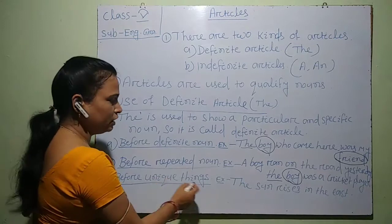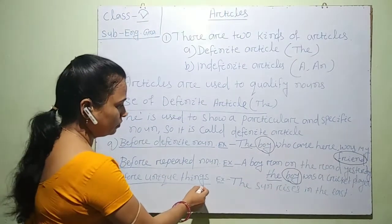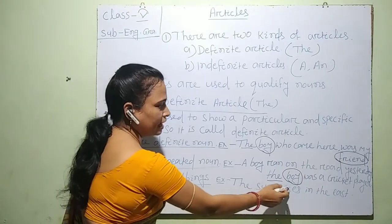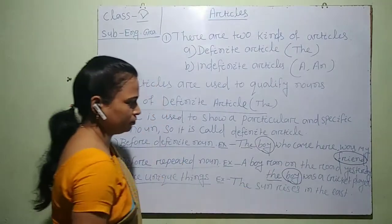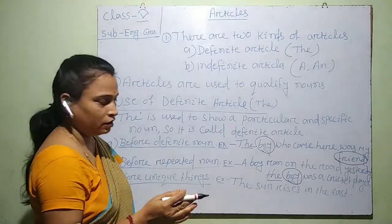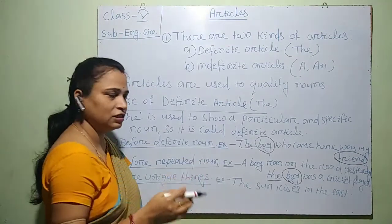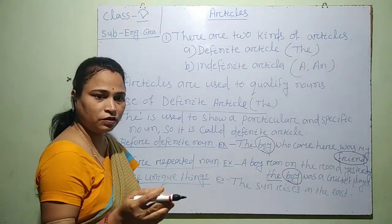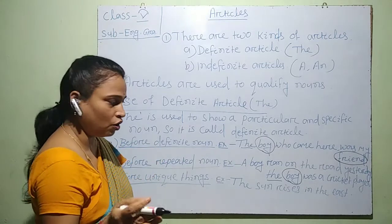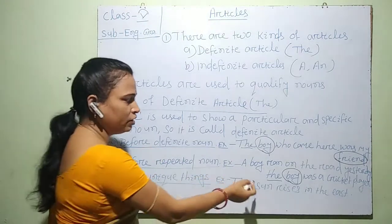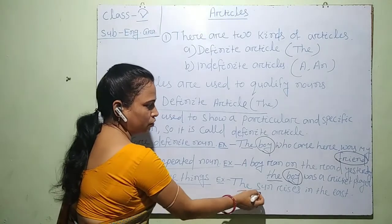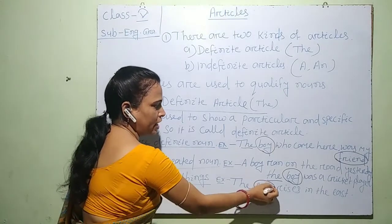We use 'the' before unique things. For example: 'The sun rises in the east.' It is a unique thing that the sun rises in the east — never in the west. So it is a unique thing, and I have used 'the' before the word 'sun'.